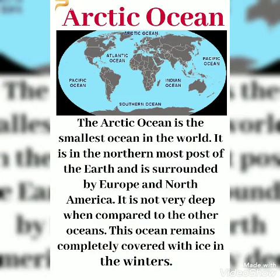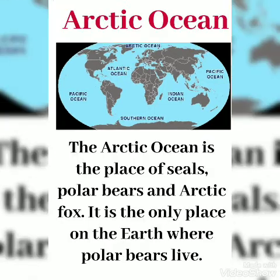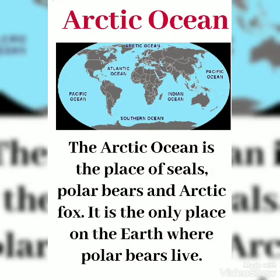Arctic Ocean. The Arctic Ocean is the smallest ocean in the world. It is in the northernmost part of the earth and it is surrounded by Europe and North America. It is not very deep when compared to the other oceans. This ocean remains completely covered with ice in the winters. The Arctic Ocean is the place of seals, polar bears and Arctic fox. It is the only place on the earth where polar bears live.